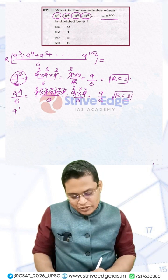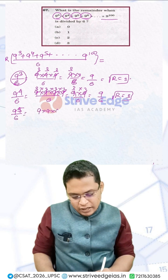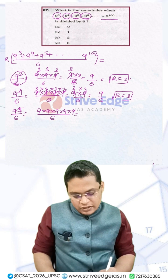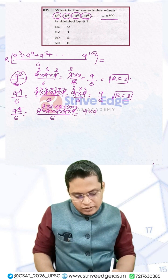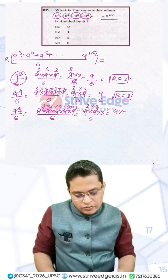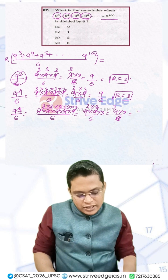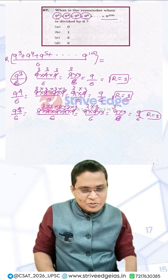For 9⁵ divided by 6, we have 9 × 9 × 9 × 9 × 9 divided by 6. Each 9 gives remainder 3, yielding 3 × 3 × 3 × 3 × 3. Simplifying step by step: 9 × 3 by 6 gives remainder 3; then 9 × 3 by 6 again gives remainder 3; and 3 × 3 = 9 by 6 again gives remainder 3.